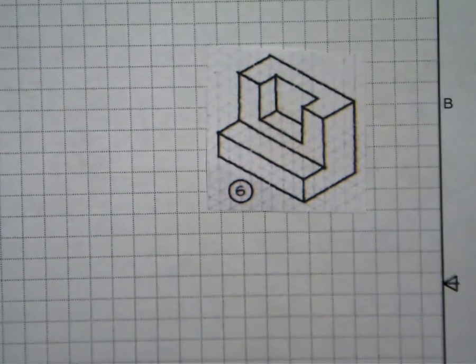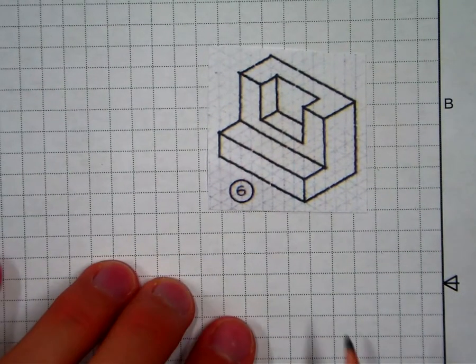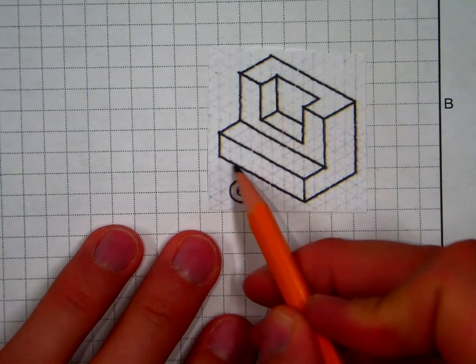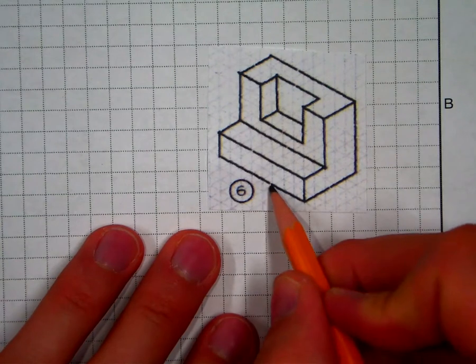Just like always, the first thing we want to do is figure out the overall dimensions. So I'm going to count blocks 1, 2, 3, 4, 5, 6, 7, 8 that direction.